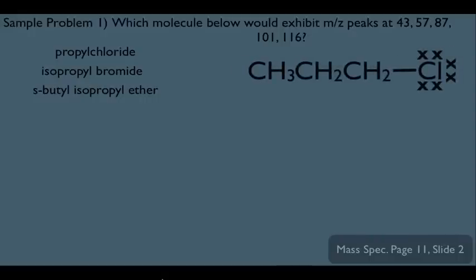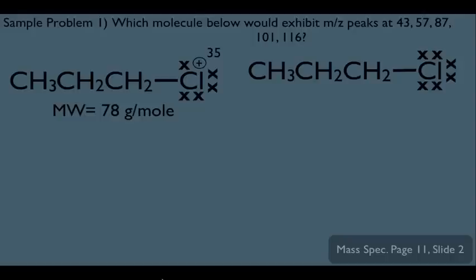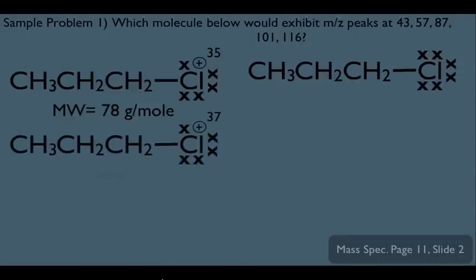Starting with propyl chloride — first we identify the molecular ion peaks. An electron on the chlorine is dislodged, giving a radical cation that should peak at 78. Because chlorine comes in two isotopes, we also expect a fragment at 80 — the M+2 peak. Right away this doesn't look promising, but let's keep going to learn how to break up a molecule quickly. That takes care of our molecular ion peaks.